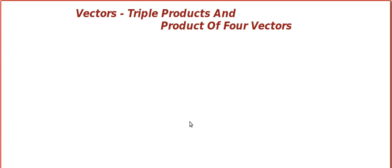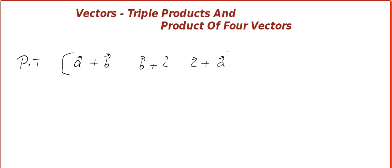Hello friends, welcome to Susan and John Math Tube. We continue with triple products. The next question: prove that STP(A+B, B+C, C+A) is equal to two times STP(A, B, C). Before we start, let me remind you that scalar triple product is denoted by box [ABC].